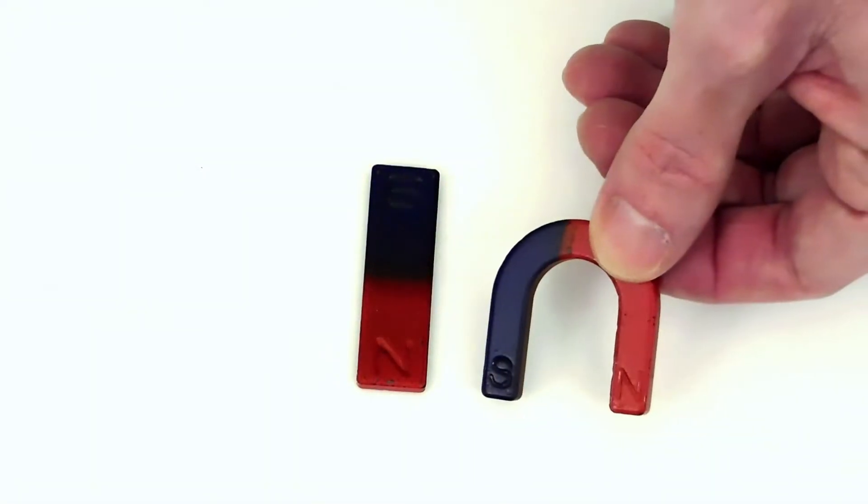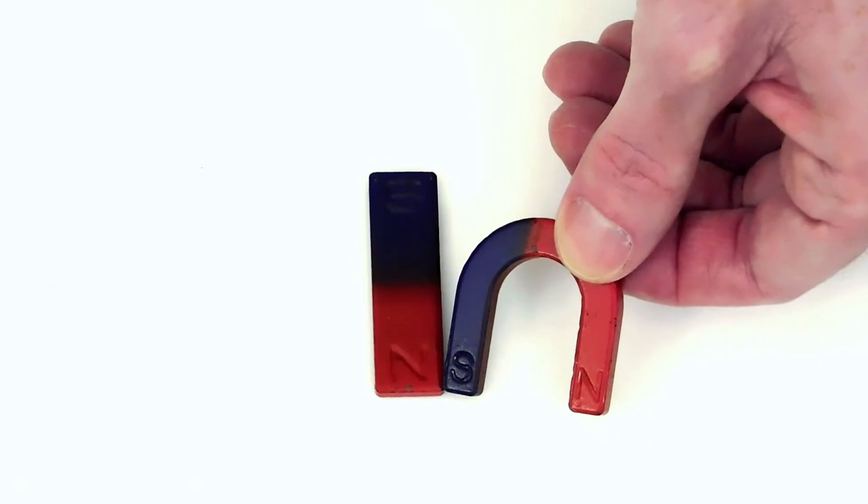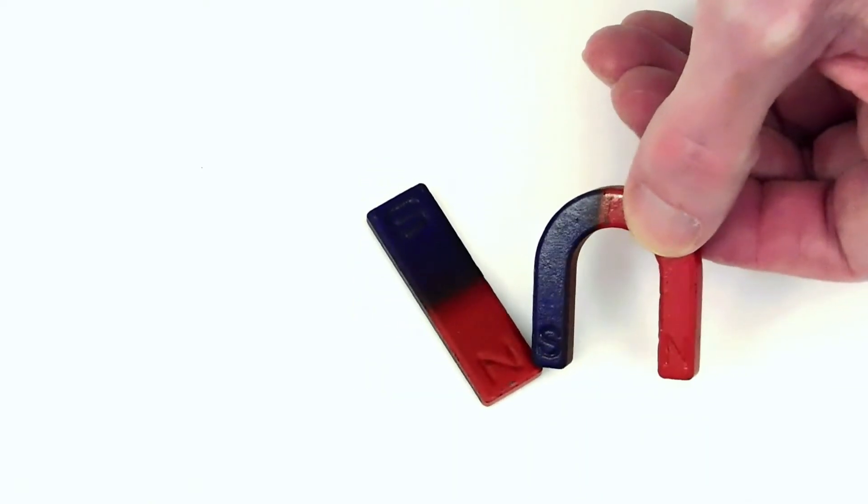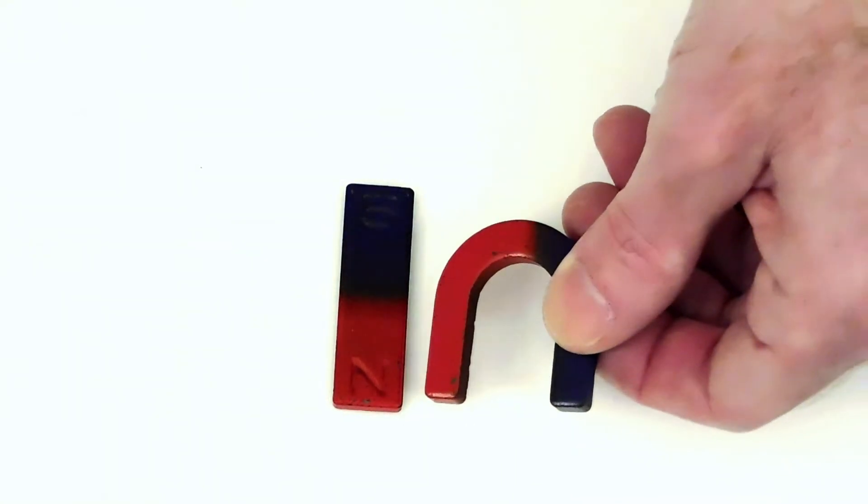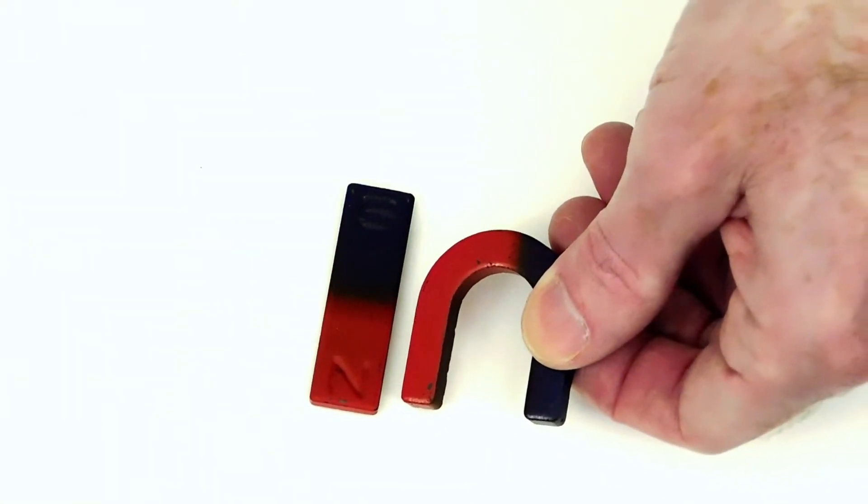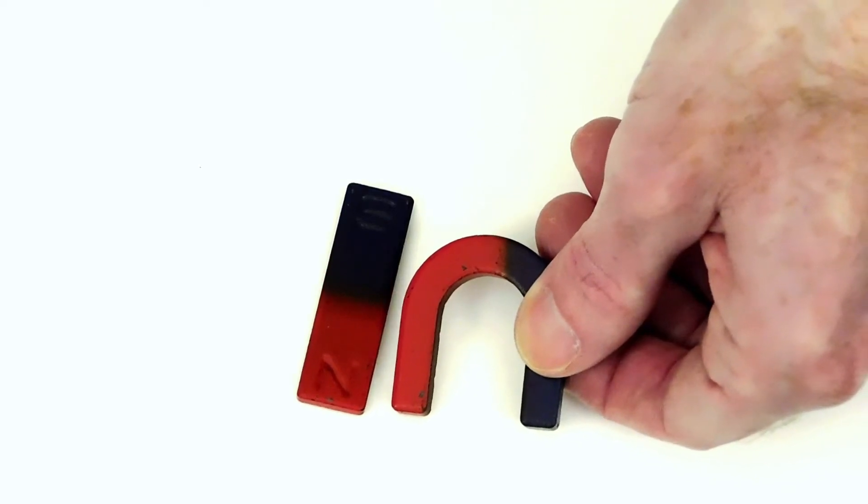When the opposite poles of magnets are close to each other, the magnets will attract each other. That means they will try to get closer. When the same poles are close to each other, the magnets will repel each other. That means the magnets will push each other away.